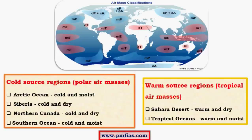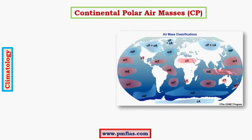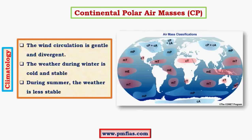In this figure we can see different source regions. We have the Arctic region, which is a significant source region for polar airmasses, and then the Siberian region, which is part of the Arctic region. Northern Canada sees the formation of continental polar airmasses, and then we have Greenland. Other than that, regions like the Sahara and tropical oceans give rise to tropical airmasses. Continental airmasses form above continents and as a result they don't have significant moisture — they are usually associated with comparatively stable conditions.